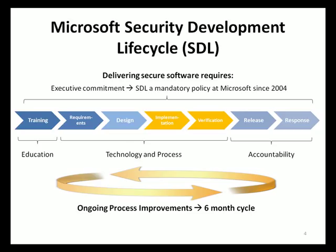In the release phase, the final security review is the major milestone that a Microsoft product team must pass in order to release a product under the SDL. During this meeting, security experts and the development team review all of the activities, mitigations, and security artifacts relevant to the project to ensure that security quality requirements are satisfied. During this phase, the product team also defines a response plan describing procedures, accountabilities, and contact information in case security vulnerabilities are discovered after the product is operational.